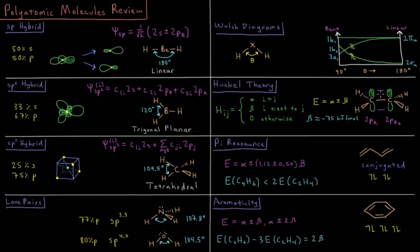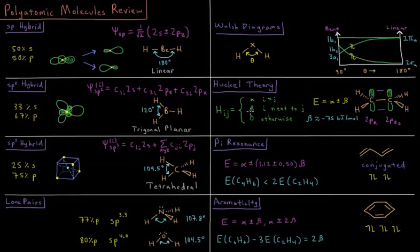If we have two adjacent pi orbitals or p orbitals, those are given the energy label beta, and those which are not adjacent are given a zero.